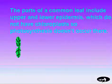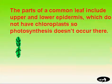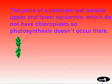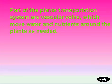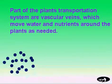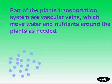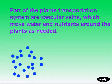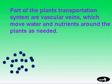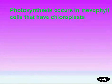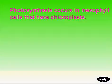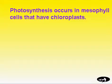The parts of a common leaf include upper and lower epidermis, which do not have chloroplasts, so photosynthesis does not occur there. Part of the plant's transportation system are vascular veins, which move water and nutrients around the plant as needed. Photosynthesis occurs in mesophyll cells that have chloroplasts.